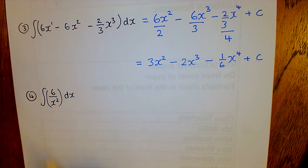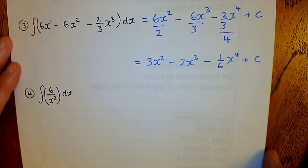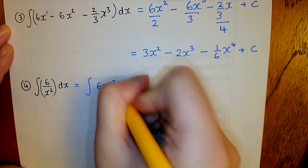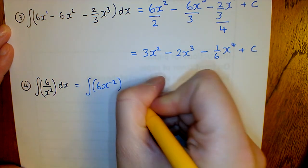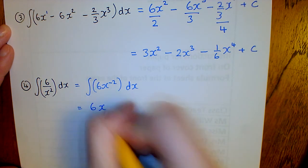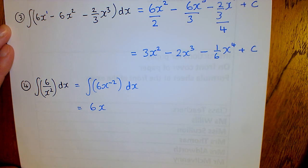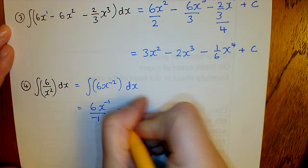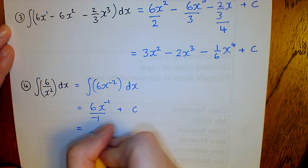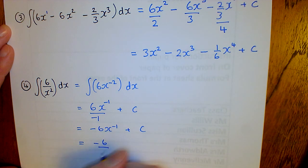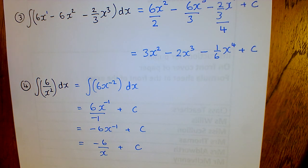We can get slightly harder things to integrate. For 6 over x squared, just as with differentiation, we write it as 6x to the power of minus 2 before we integrate. We're on minus 2 and we add 1 to get minus 1, then divide by the new index minus 1. That gives us minus 6x to the minus 1 plus c, or we can write that as minus 6 over x plus c.